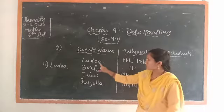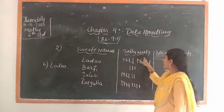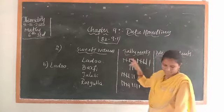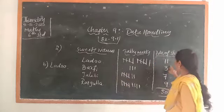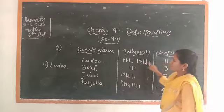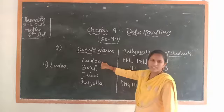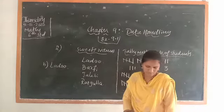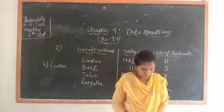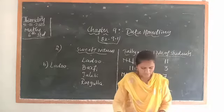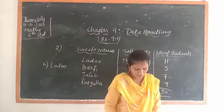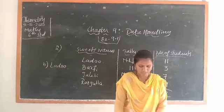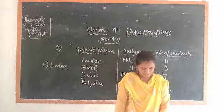To summarize: arrange sweet names in a table with tally marks and number of students columns. The sweet preferred by most students is ladu, which has the highest count. Next, question 3: Catherine throws a die 40 times and notes the number appearing each time as shown. The die has faces 1 to 6.